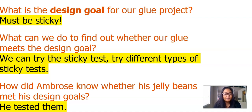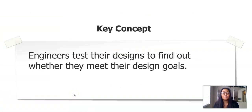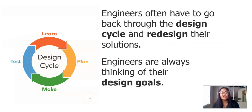The last question reads: how did Ambrose know whether his jelly beans met his design goals? From the book you read last time, he tested them. So we're coming to an important key concept: engineers test their designs to find out whether they meet their design goals. Engineers often have to go back through the design cycle and redesign their solutions. Our design goal for our glue project is that the glue must be sticky — keep that in mind.